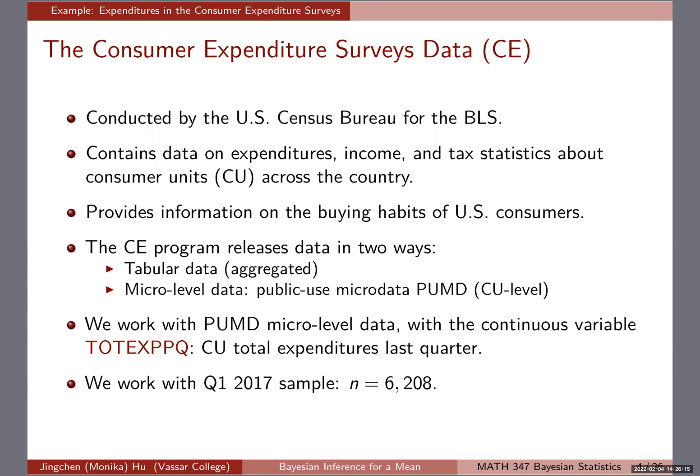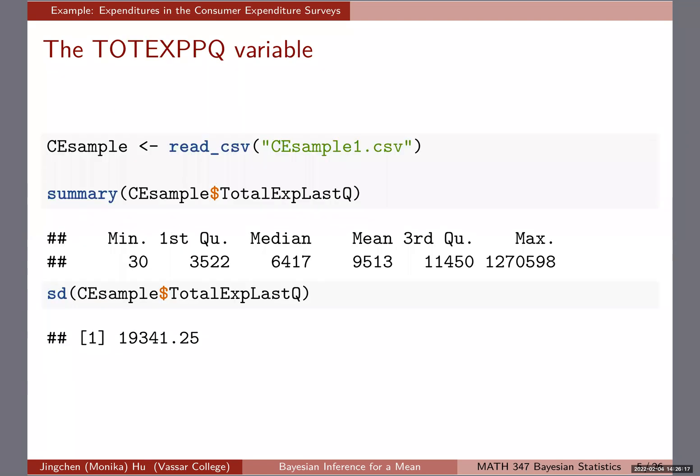You can download the data and read it. We're using overall tidyverse syntax, so we're using the read_csv function. I'm showing you mostly some summary statistics about that particular expenditure variable. You can see the minimum, the maximum, and most importantly the median, the mean, and also the standard deviation.